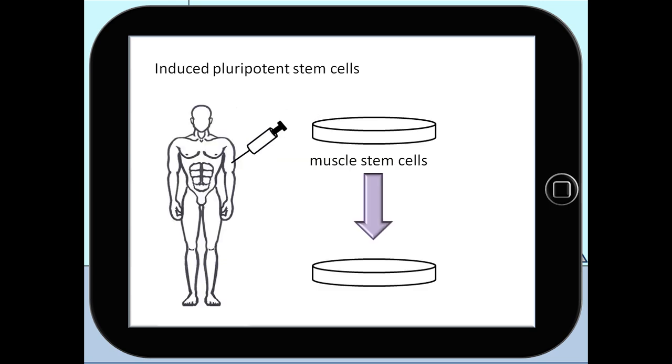Induced pluripotent stem cells are produced by introducing genetic elements and coding proteins into different types of cells, for example muscle stem cells. This is called reprogramming of adult cells into pluripotent stem cells.